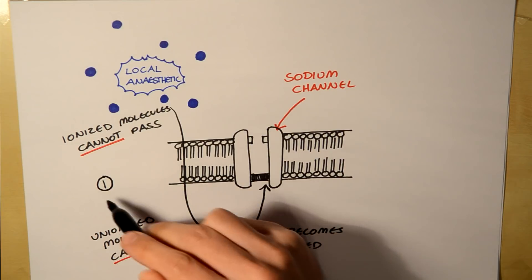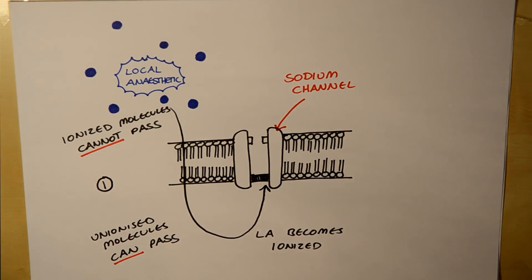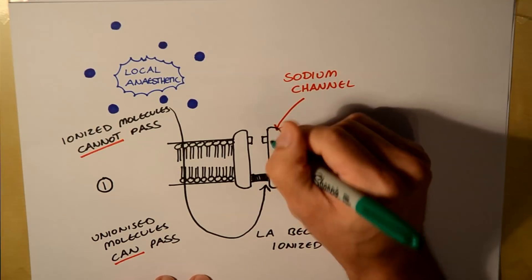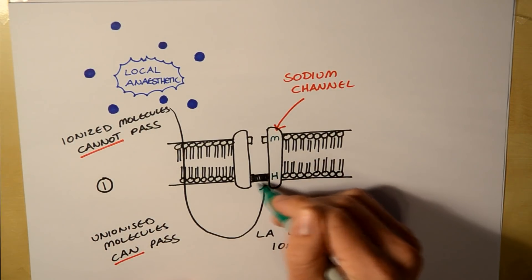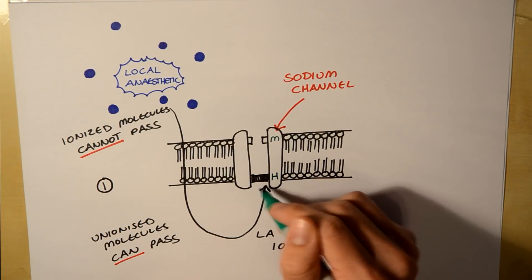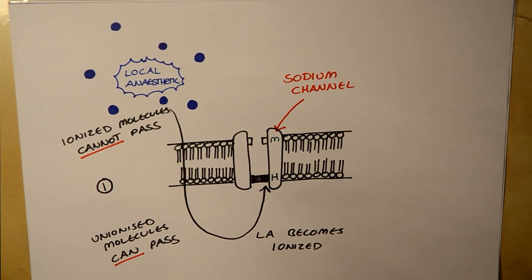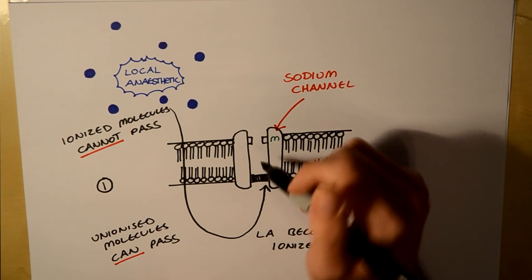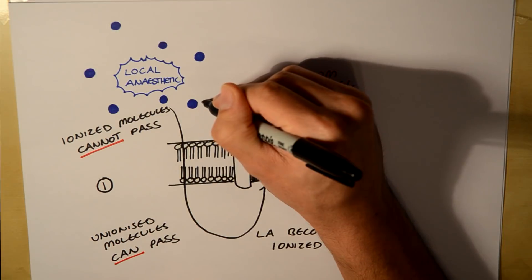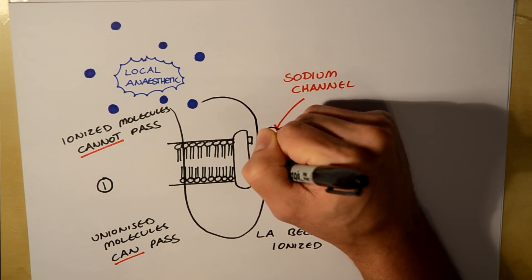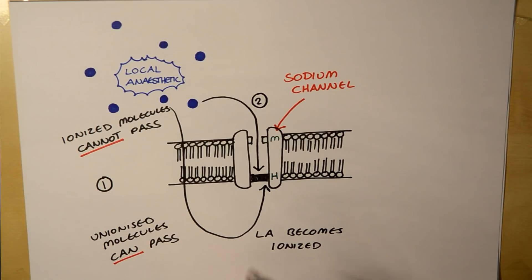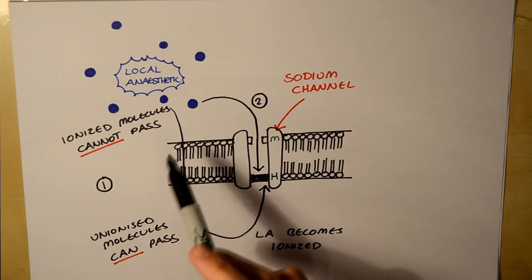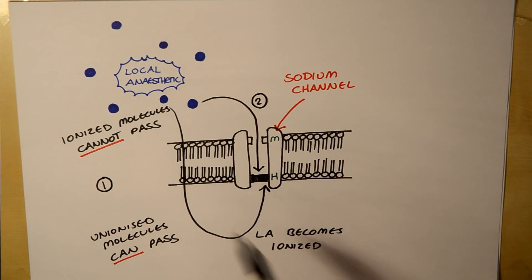The second, more minor route: when you look at the sodium channel, there are two portions — the M gate and the H portion. The H portion needs to be closed to stop sodium from passing through. Even if the local anaesthetic is ionized, when the sodium channel is open it can pass through and act on the H portion directly. This route is slower and doesn't work as well, but is partially responsible for the block.